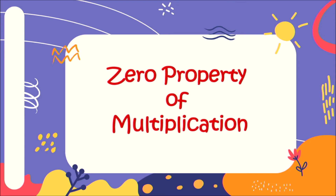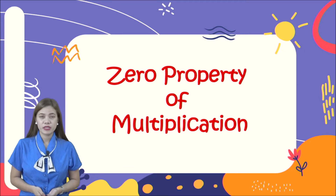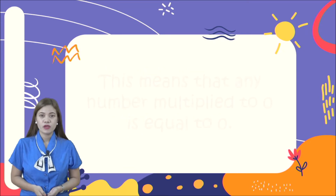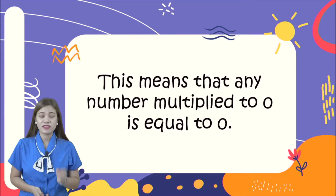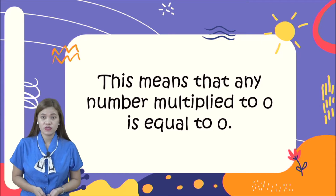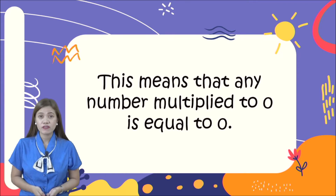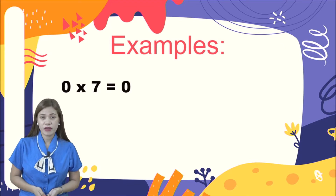The next one is zero property of multiplication. When we say zero property of multiplication, this means that any number multiplied by zero is equal to zero. This is one of the very easy parts of properties of multiplication, along with identity property. Let us look at the examples.